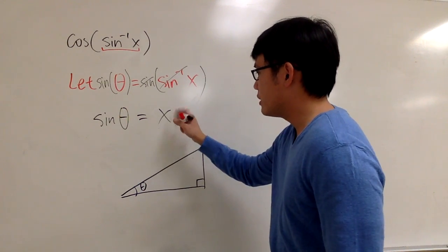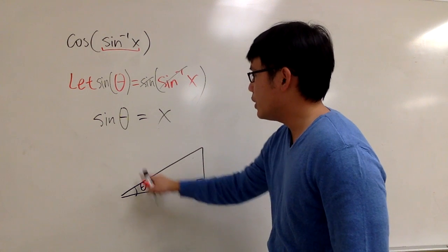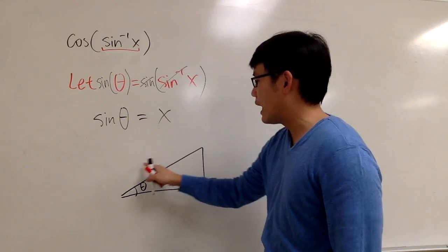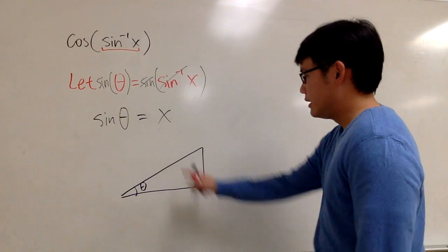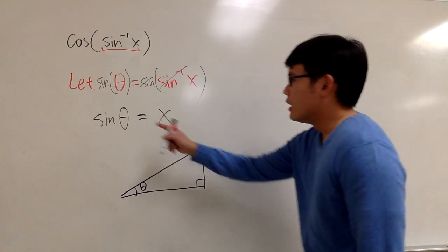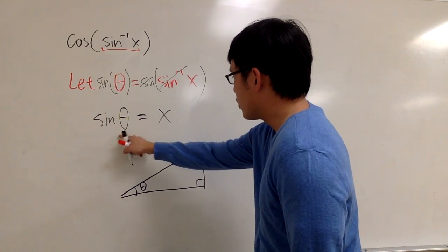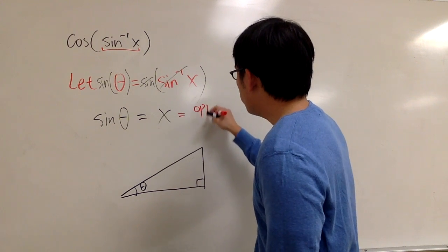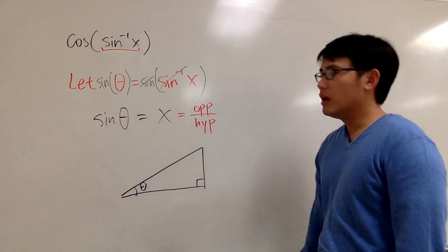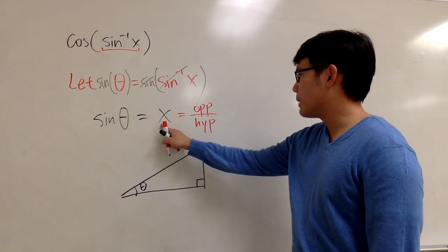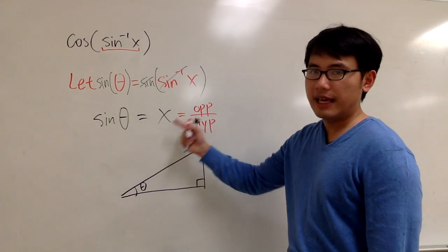So based on this piece of information, I put the theta right here, and we are talking about sine. And we'll have to figure out these three sides. Sine in the right triangle means we have to do the opposite over hypotenuse. And as you can see, we have x, but we can look at x as a fraction x over 1.